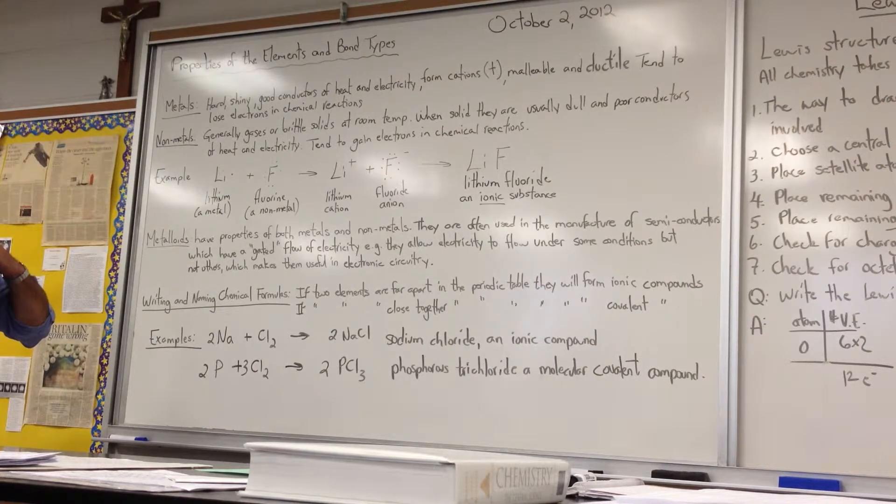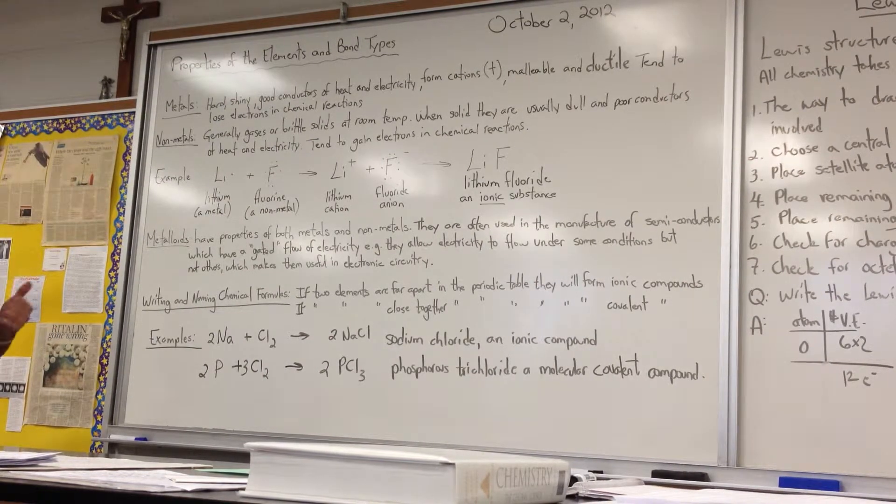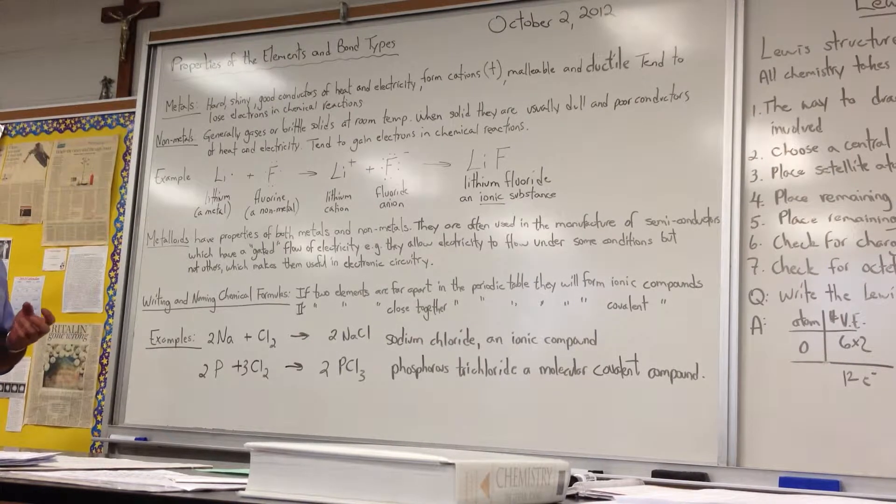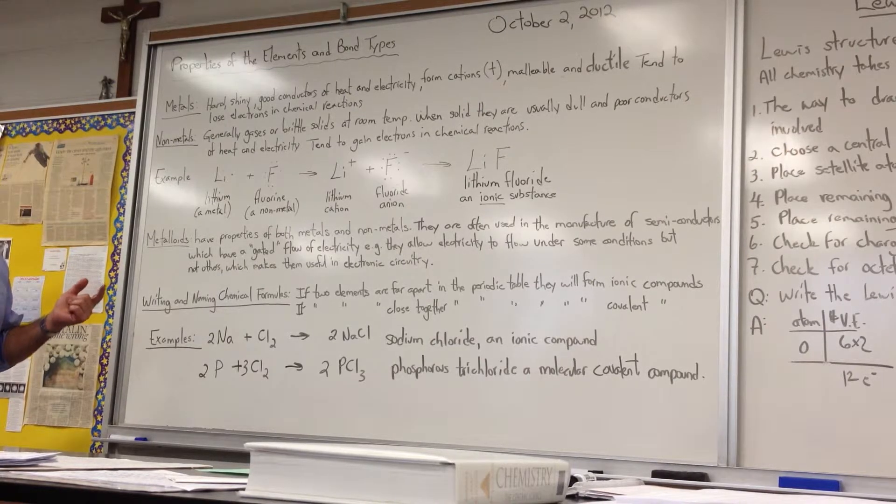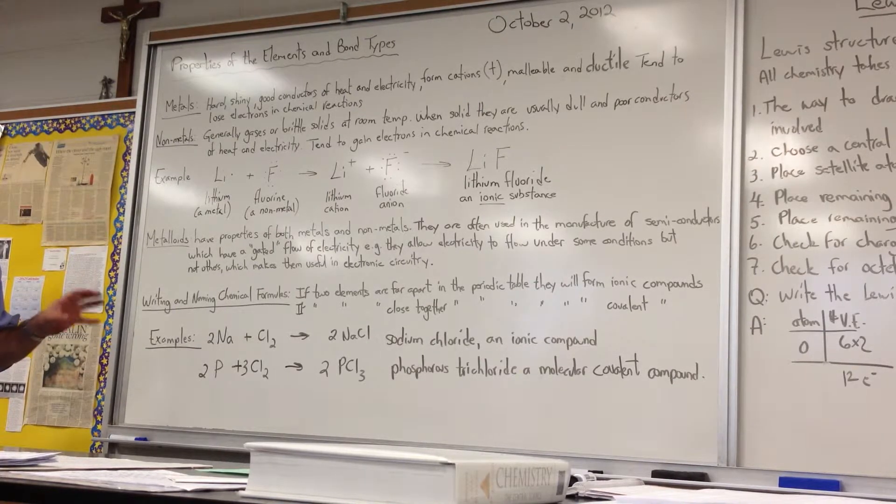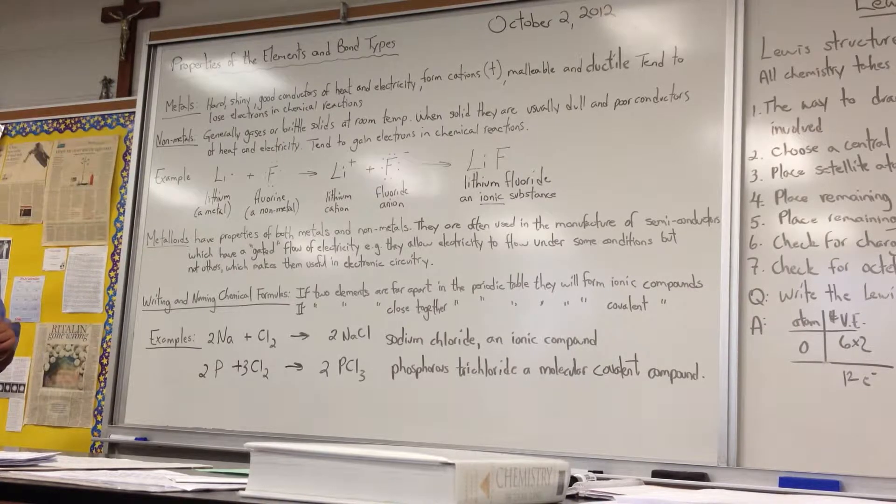First of all, we'll look at metals. Metals are known for being hard, shiny, good conductors of heat and electricity. They form cations, which means they lose electrons. In fact, there's only one metal that ever even gets negative charge when it's in the cation form, it's rhenium. All the other metals will only form positive charges.